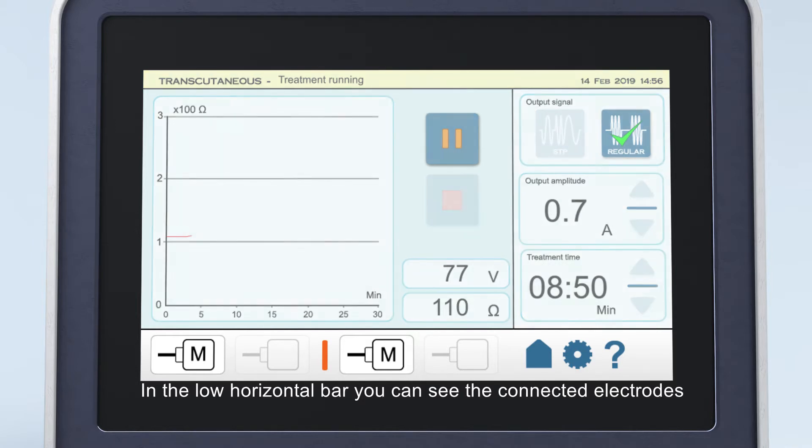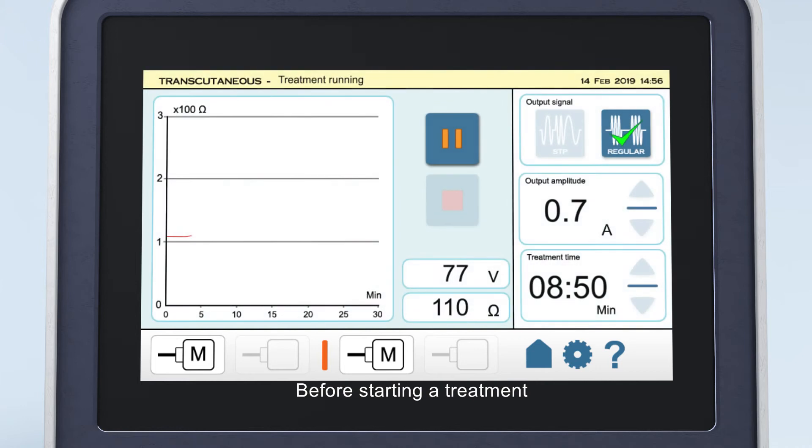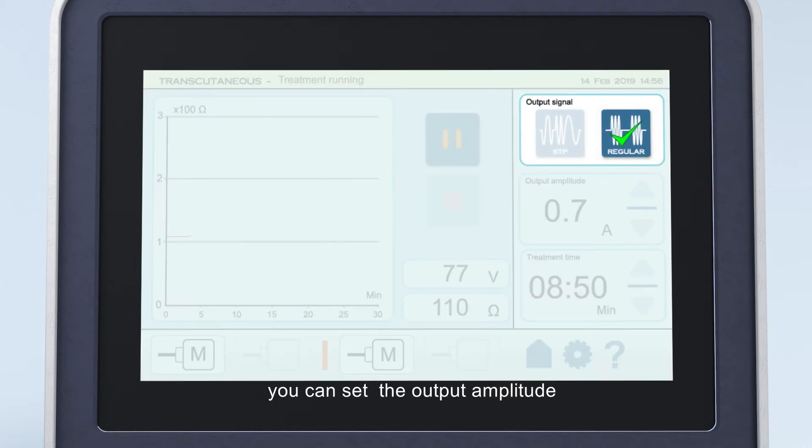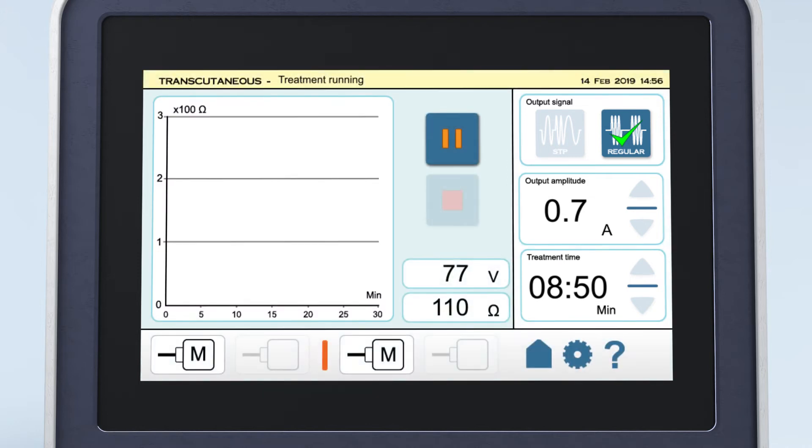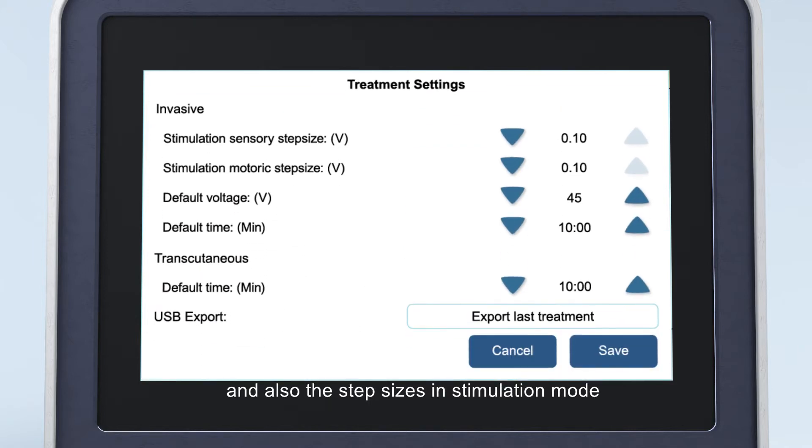In the low horizontal bar, you can see the connected electrodes. Before starting a treatment, you can set the output amplitude, treatment time, and you can monitor the impedance. In the settings menu, you can change the default settings and also the step sizes in stimulation mode.